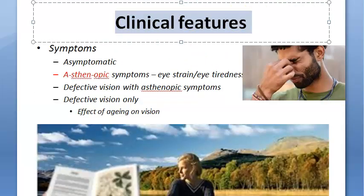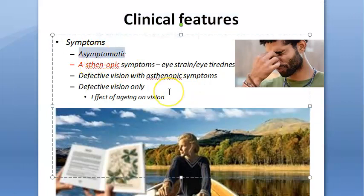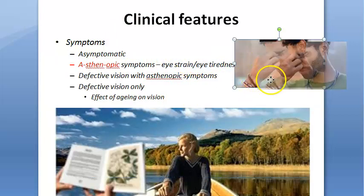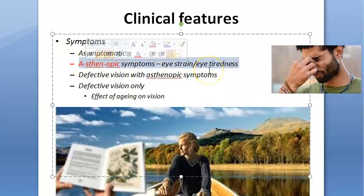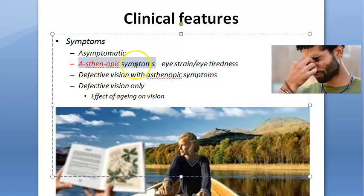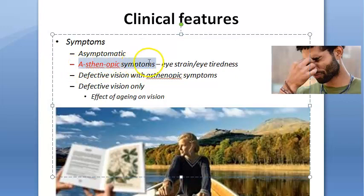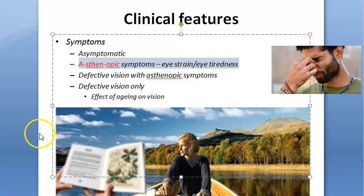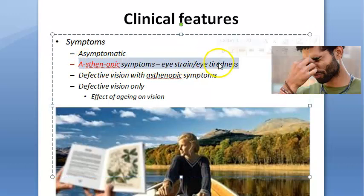Clinical features: mostly these people will be asymptomatic, using their accommodation to see far things. They can have asthenopic symptoms — eye strain, eye tiredness — because they use accommodation not just for near but for far things too. Asthenopic symptoms include tiredness of eyes, frontal or frontotemporal headache, watering, and mild photophobia. These are usually associated with near work and worsen toward evening.